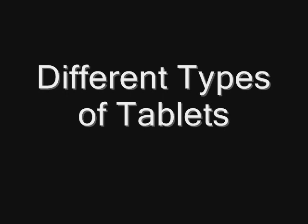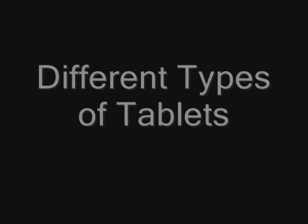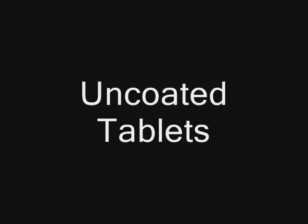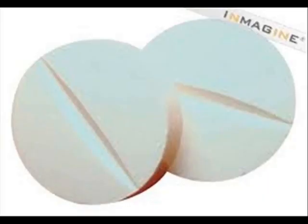Hello folks, in this video I'm going to talk about different types of tablets in the pharmaceutical dosage form. First, uncoated tablets — these are directly compressed tablets which are taken orally for most of the time.